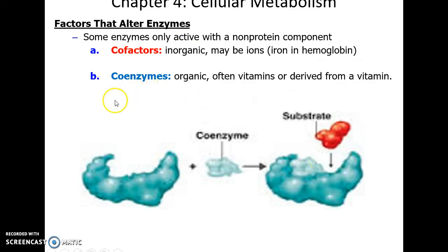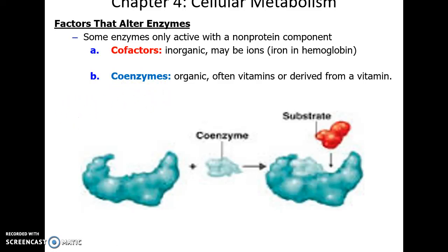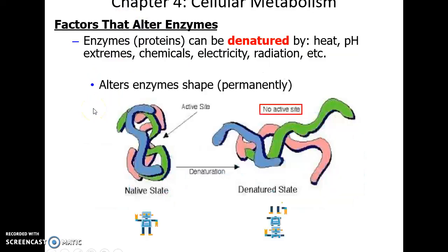Factors that alter enzymes include cofactors. Cofactors are inorganic substances necessary for some enzymes to function — for instance, iron is a cofactor for hemoglobin to be able to bind oxygen. Sometimes enzymes need coenzymes, which are organic substances often derived from vitamins. The enzyme needs the coenzyme in order to function as a proper structure.